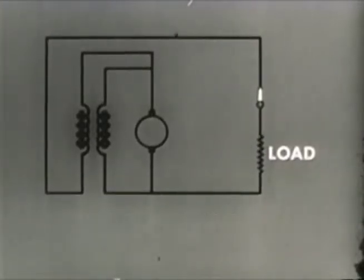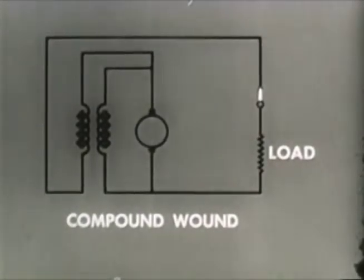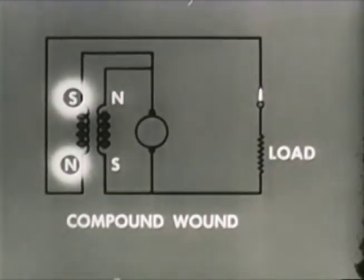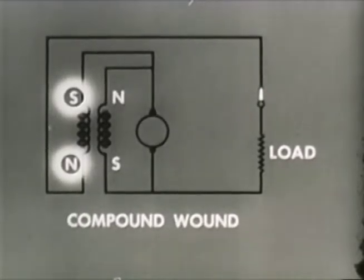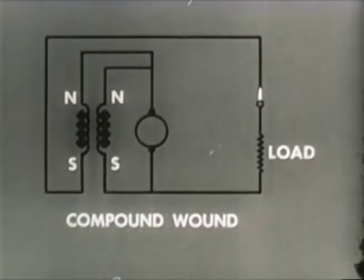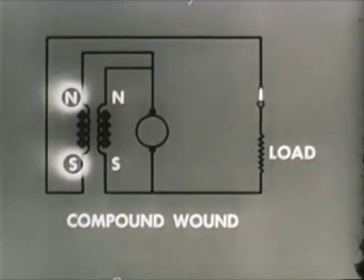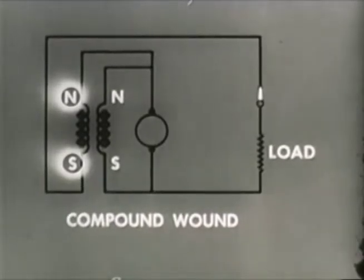By changing the armature winding, a compound-wound generator results, which combines the best features of both types — the series and the shunt-wound generator. When windings are arranged so that magnetic fields oppose each other, it becomes, in effect, a series generator. This is used only where constant current is the prime requirement, such as in arc welding. By changing the magnetic polarity of one of the fields, the field windings aid one another. As a result, this compound-wound generator has good voltage and fair current regulation.